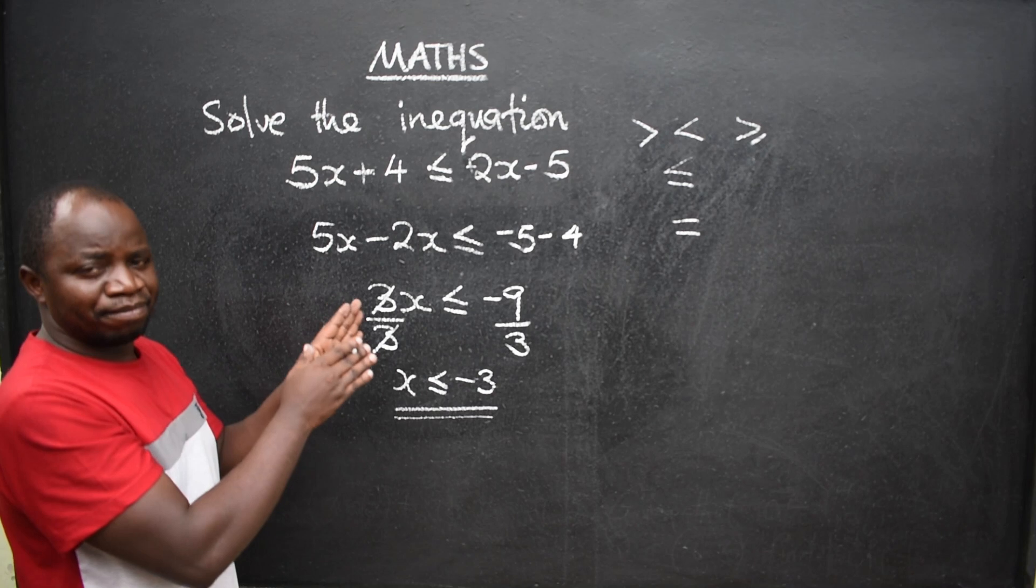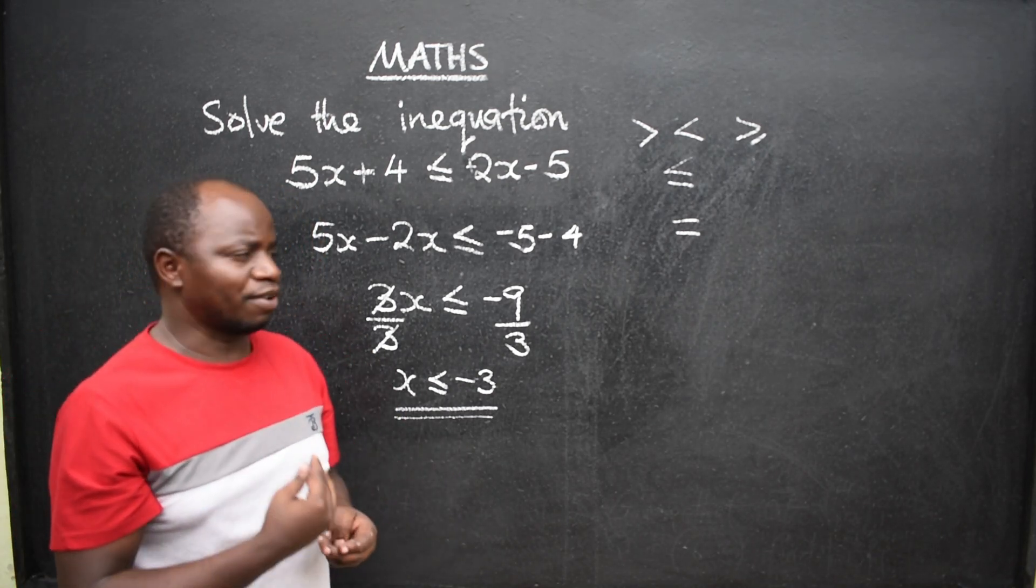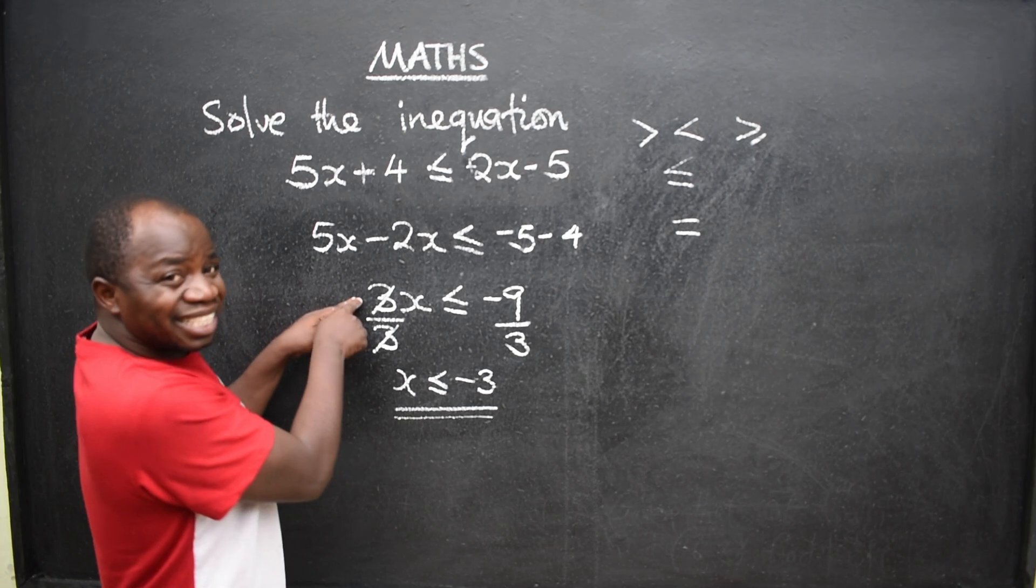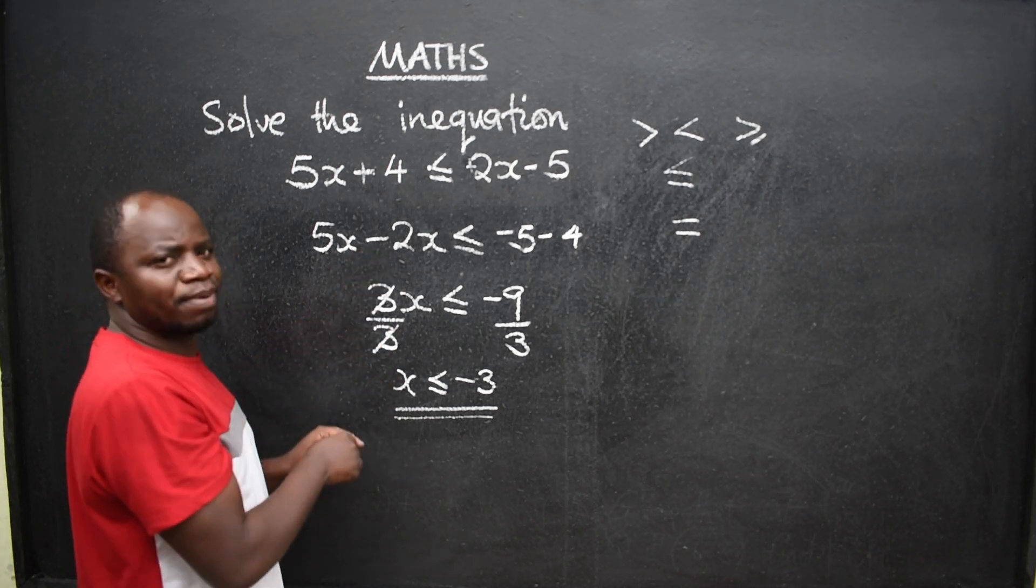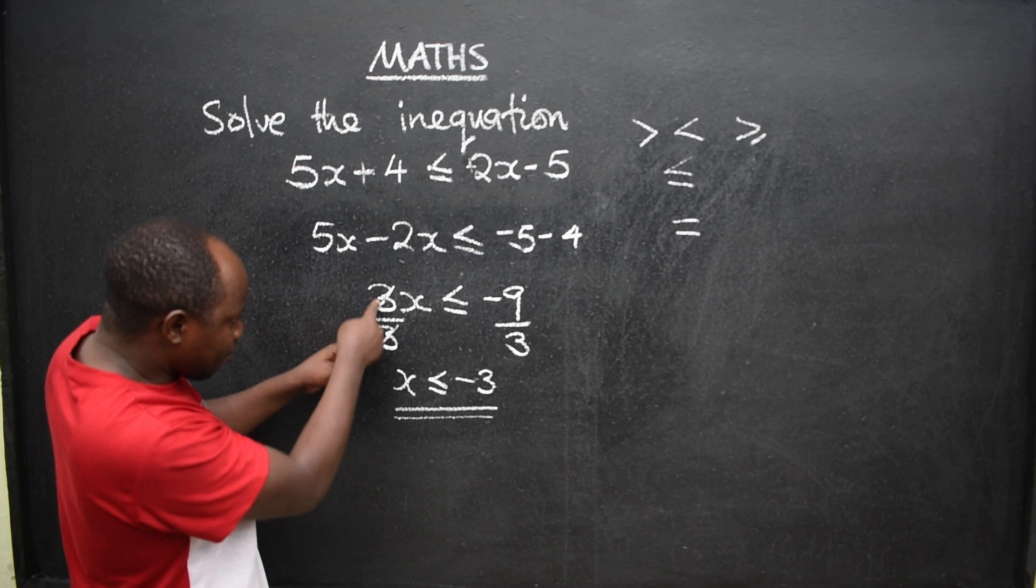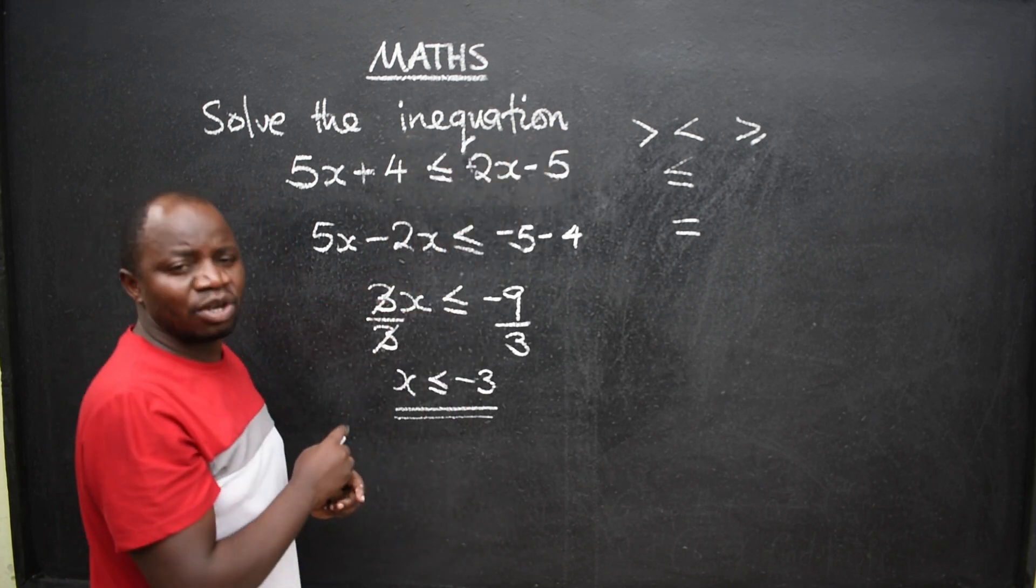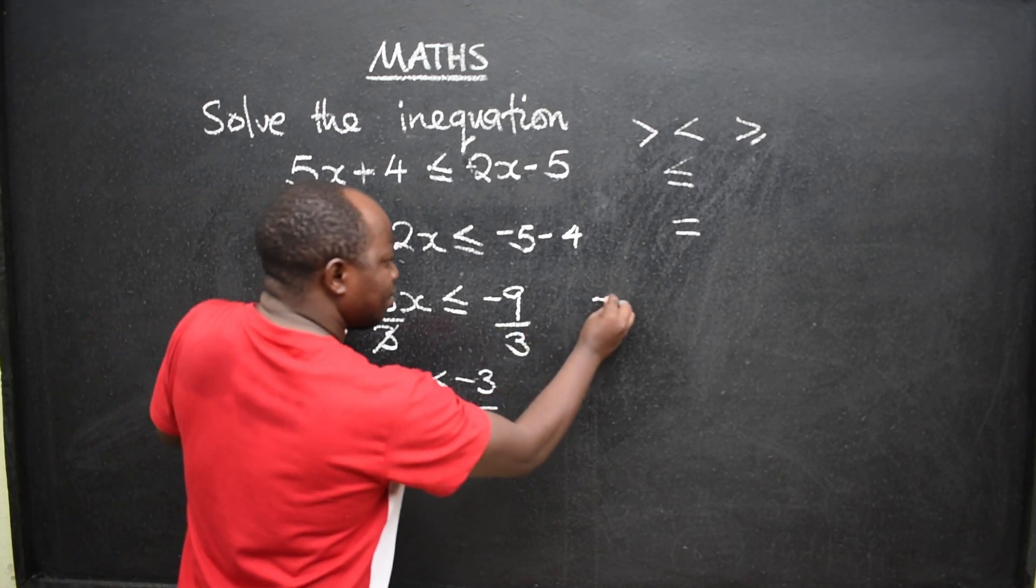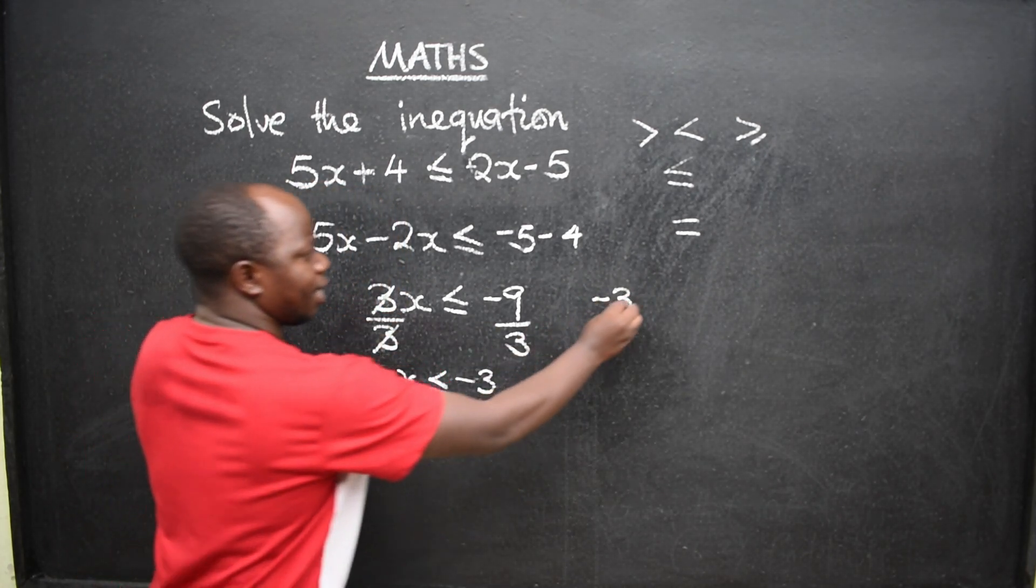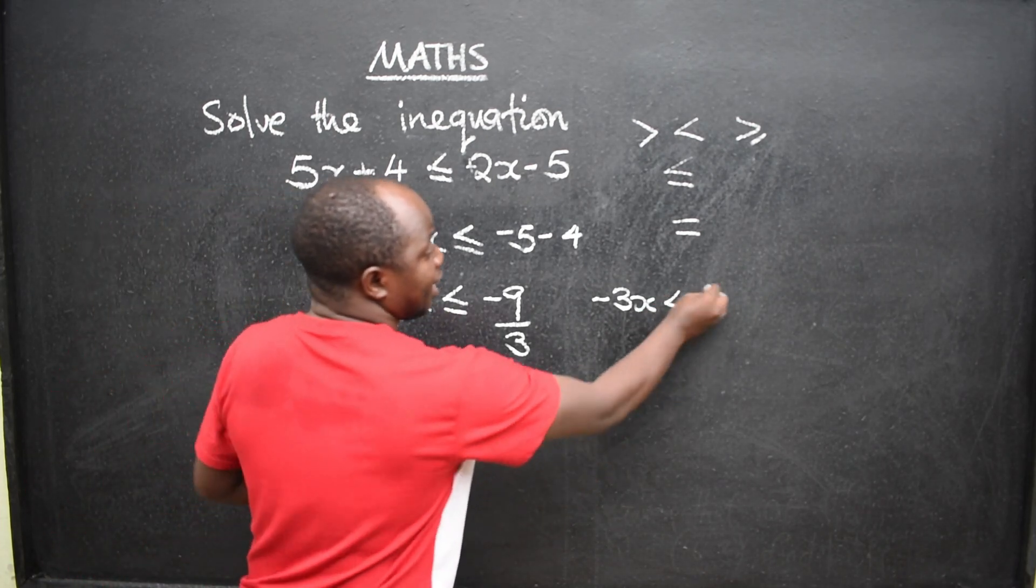So don't forget. Now, there is this principle that I want you to take note. If there was a negative here, when you are dividing or multiplying concerning inequalities or inequations, this is the rule. So if there was a negative here to say negative 3x, like this, if I have got negative 3x, let's say less than 9.